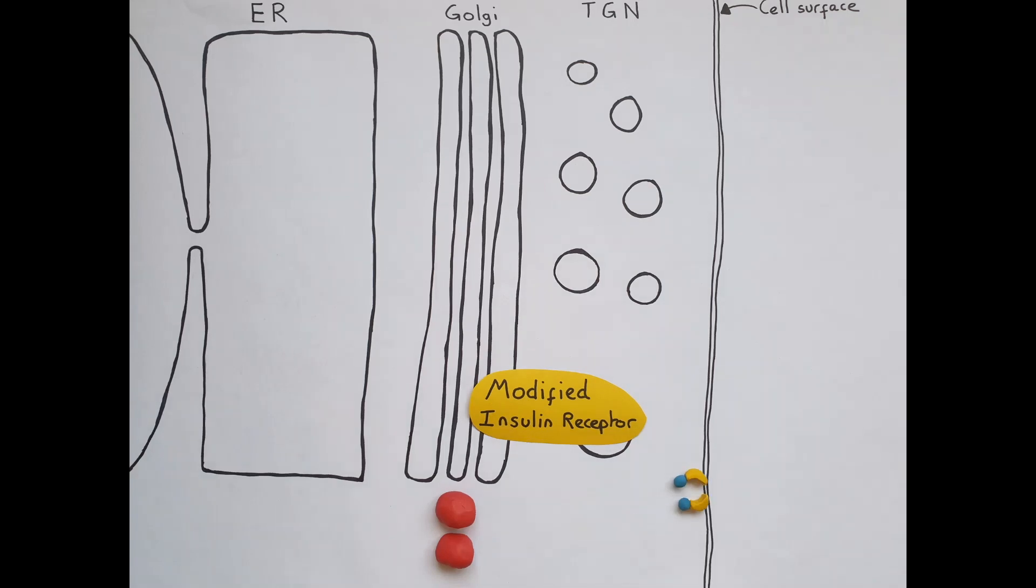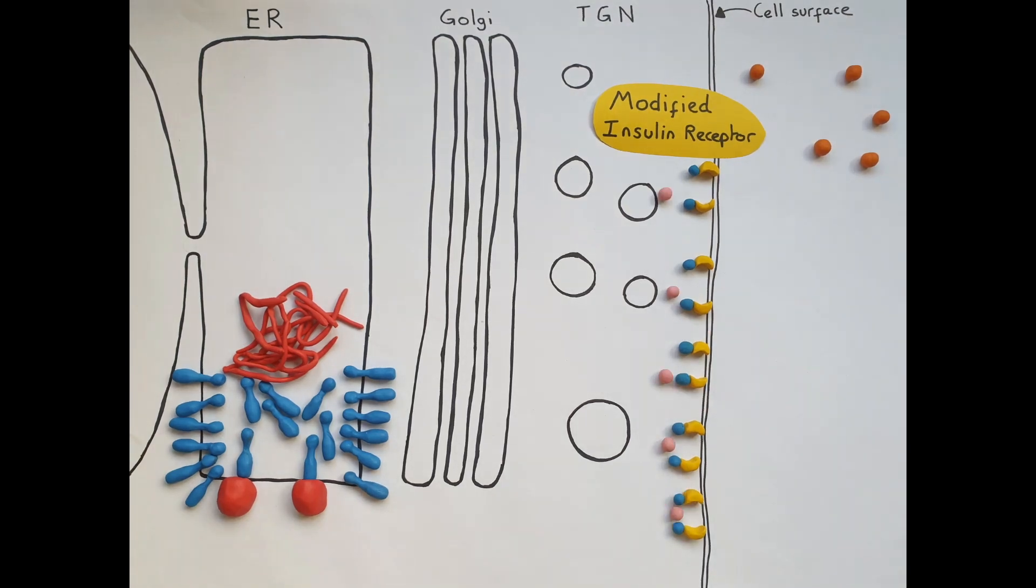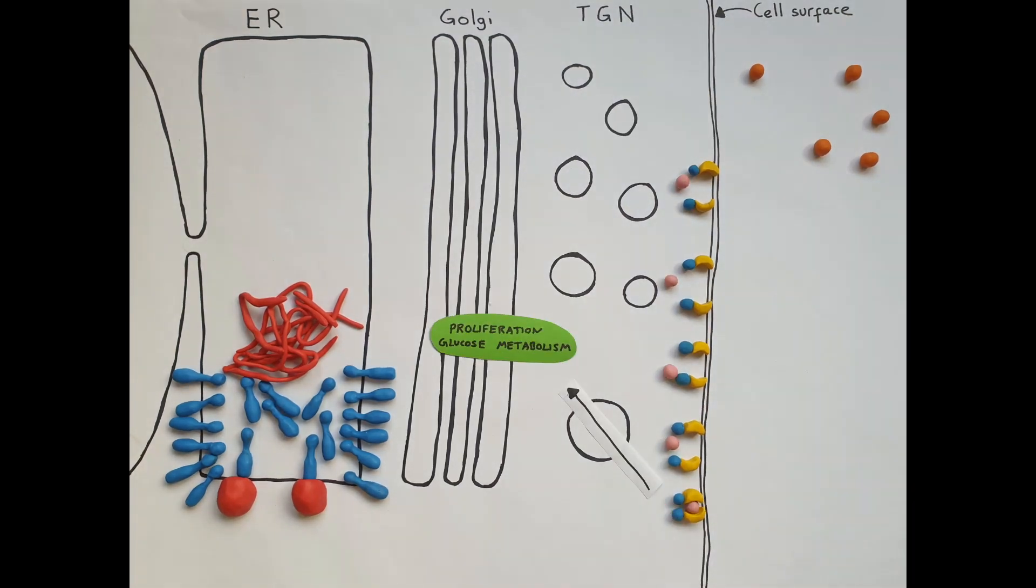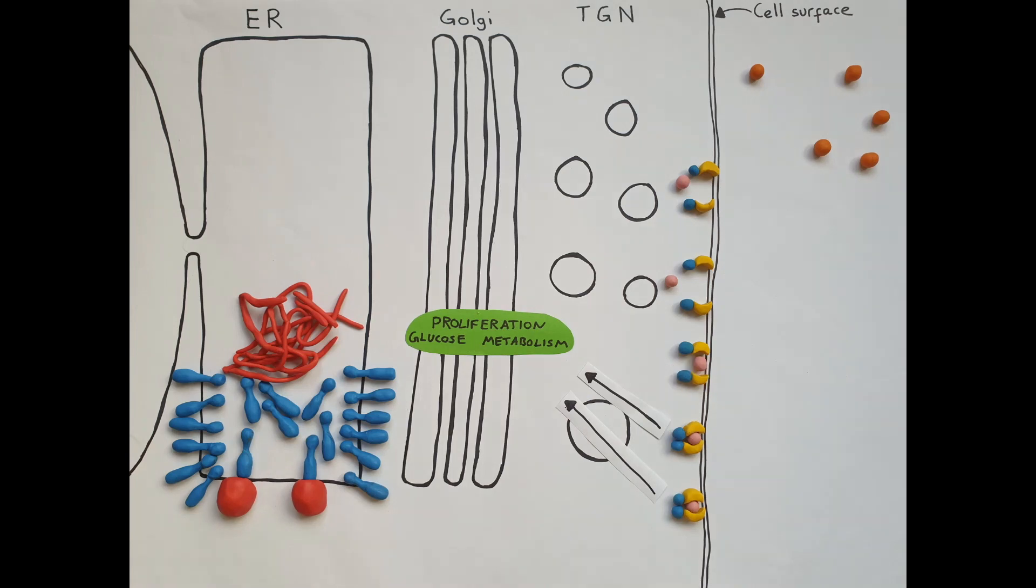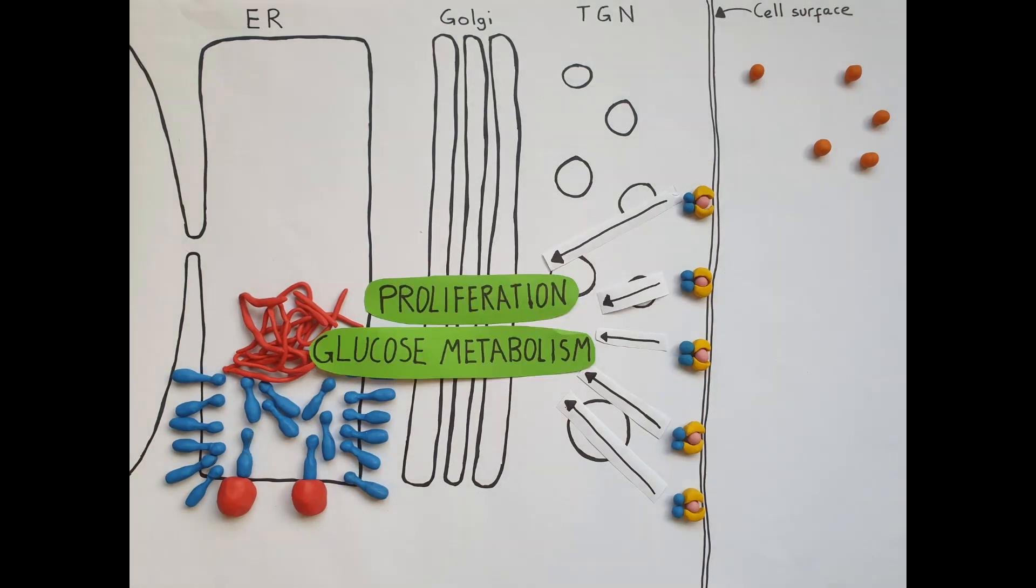The modified insulin receptor can be activated by a special drug. We found that unfolded proteins in the ER no longer affected stimulation of proliferation and glucose metabolism when this synthetic cytosolic receptor was activated with our drug.